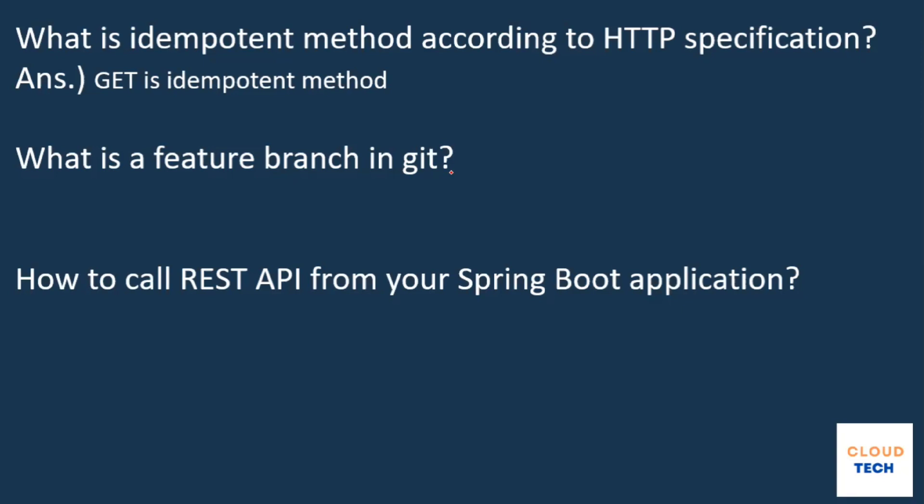The next question is about feature branches in Git. When we use Git, every developer works on a different branch. For example, team one works on feature one and team two works on feature two. Team one creates a branch named 'feature-one' and team two creates a branch named 'feature-two'. They do their work independently and then finally merge both branches back to the master branch. This is the concept of feature branches in Git and is very important in the IT industry.